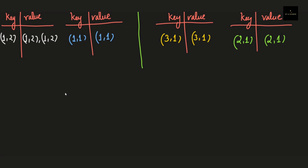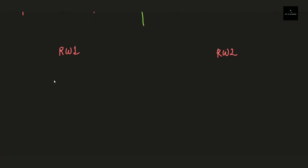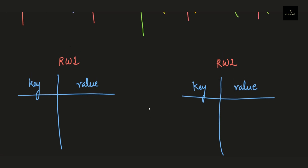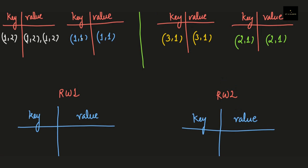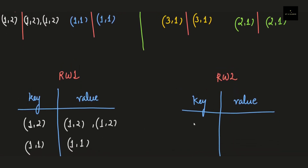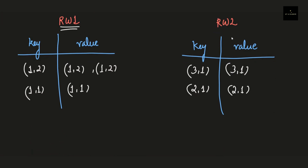Now we move to the next task: clubbing the two tables in reducer worker 1 and the two tables in reducer worker 2 into one single key-value table each. While clubbing the tuples, we also check whether there are duplicate keys. In reducer worker 1, the first table contains tuple 1,2 — we write it, check for duplicates in the next table, and there are none. The next tuple is 1,1 — also no duplicates. Similarly for reducer worker 2, which contains two tuples without any duplications.